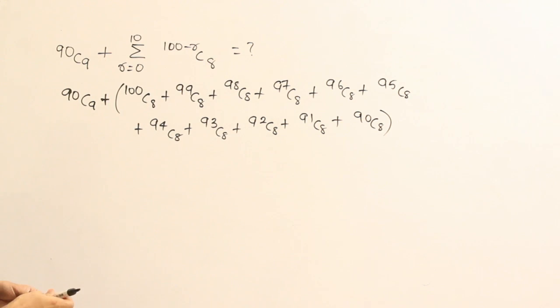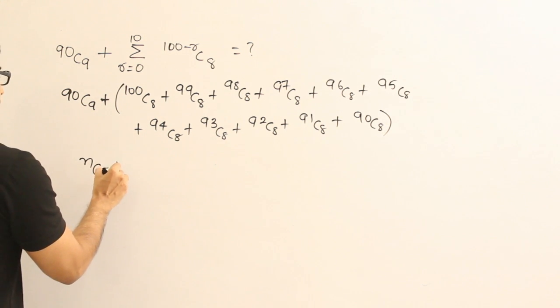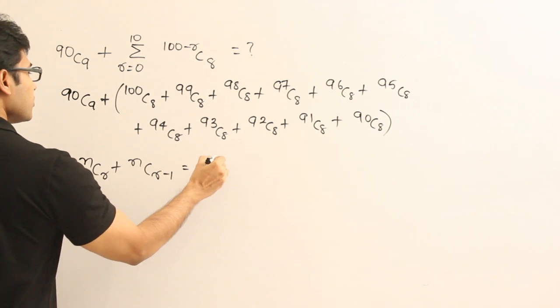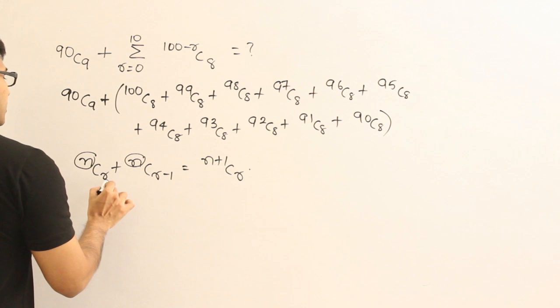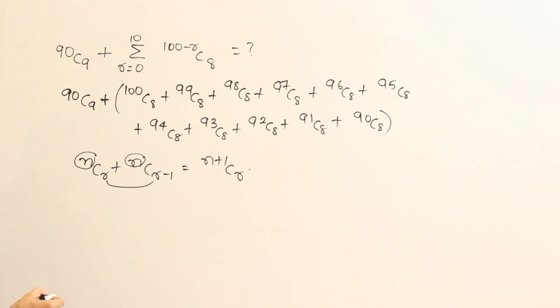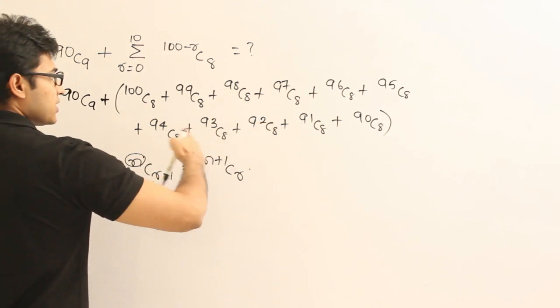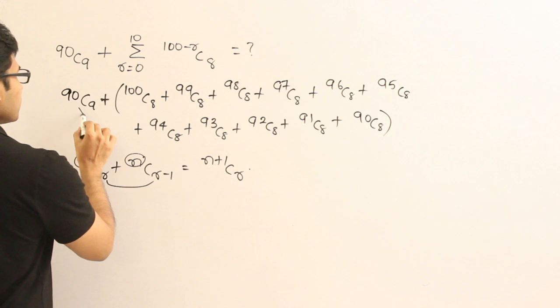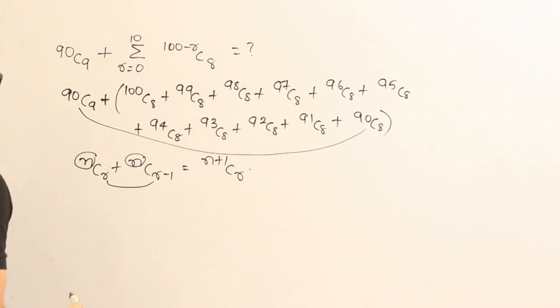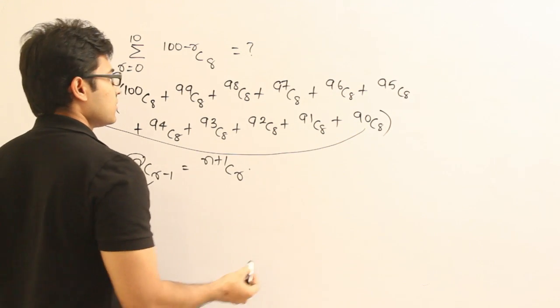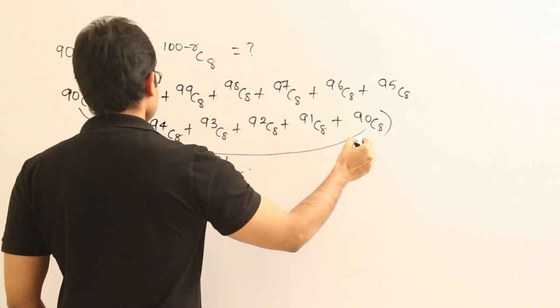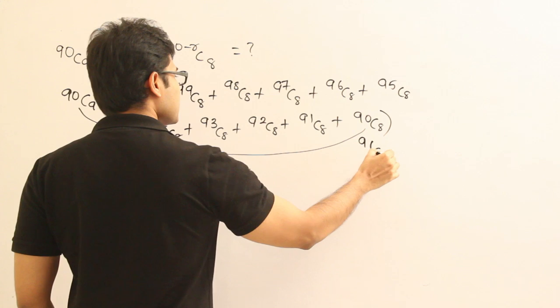So we are supposed to add all of them and then find the result. So for this, I am going to use the same result which we have seen earlier. What is it? NCR plus NCR minus 1 equal to N plus 1 CR. So if you want to see what are the terms that have to be combined, always N should be same and these two terms should differ by 1. Now check for which of them N is same. For all these 11 terms, N is not same. So you cannot combine them. Only combination you could do is with this one and this one. So if I combine these two, what is the result you are going to get? See, NCR and NCR minus 1. Then we are going to get N plus 1 CR which is nothing but 91C9.